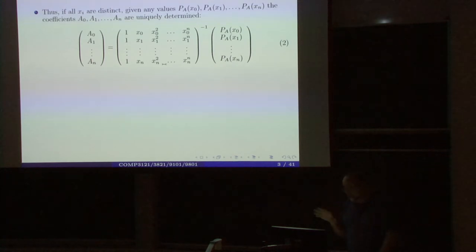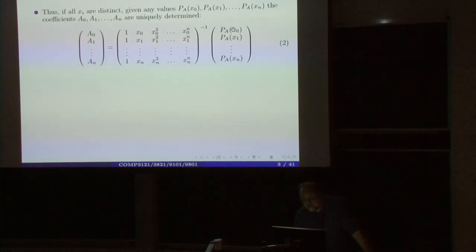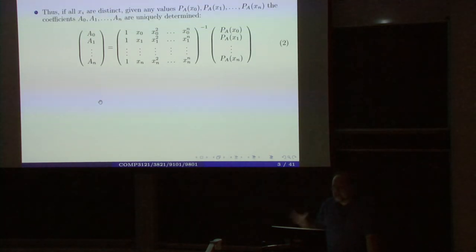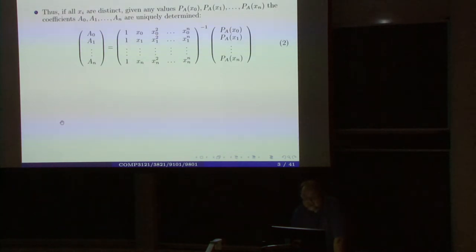One of the beautiful things that the Fast Fourier Transform does is allow you to change between value representation and coefficient representation of polynomials in time n log n. If n is of order 10,000 or 100,000, that's a gigantic saving. So one of the important uses of FFT is to enable this change from coefficient representation to value representation — and back — very efficiently in time n log n.